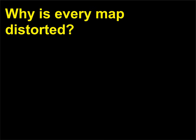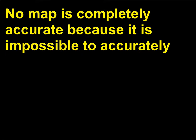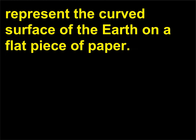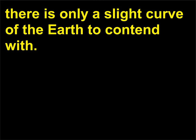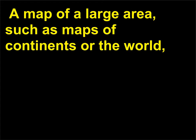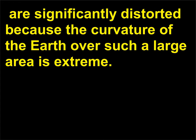Why is every map distorted? No map is completely accurate because it is impossible to accurately represent the curved surface of the Earth on a flat piece of paper. A map of a small area usually has less distortion because there is only a slight curve of the Earth to contend with. A map of a large area, such as maps of continents or the world, are significantly distorted because the curvature of the Earth over such a large area is extreme.